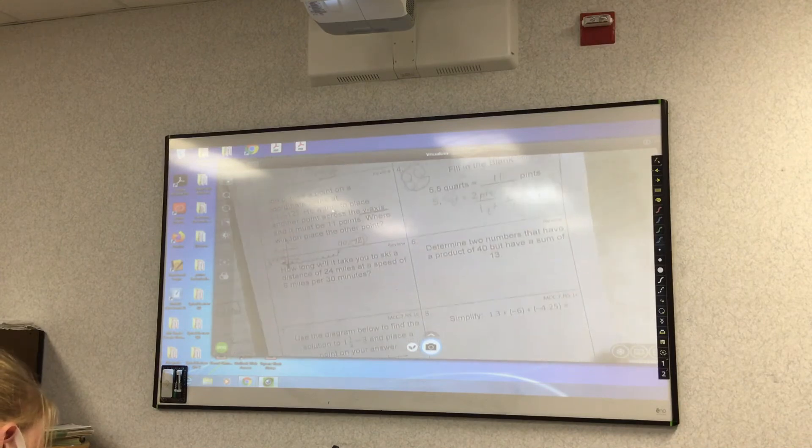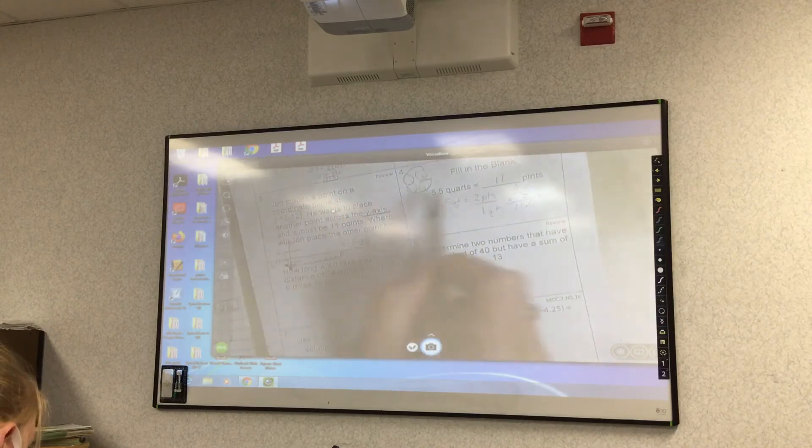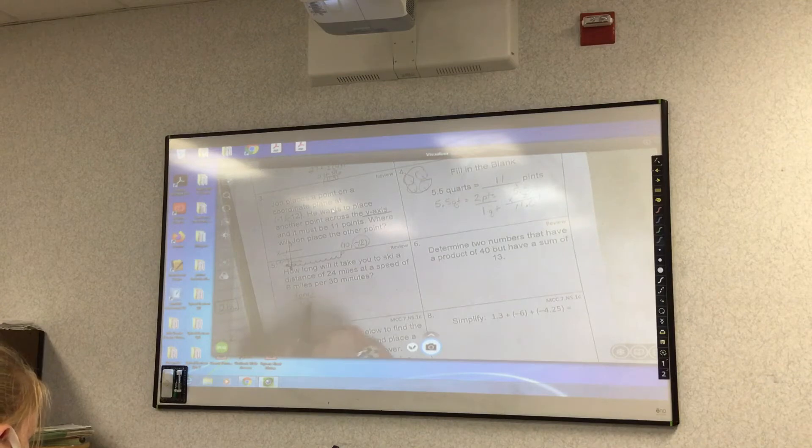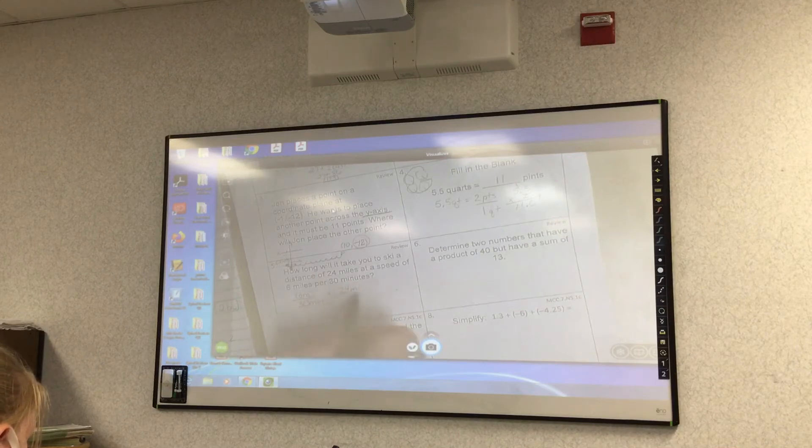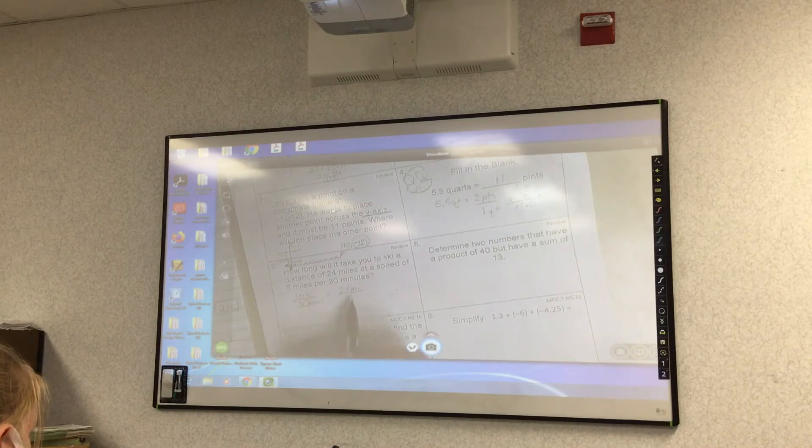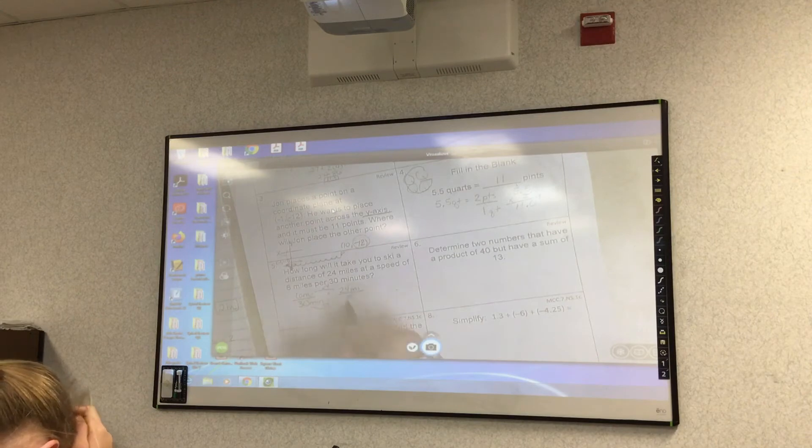How long will it take you to ski a distance of 24 miles at a speed of six miles per 30 minutes? Do you guys notice all of these problems are ones that we had this week? So if you go back to your notes, it'll help you when you're trying to fill it out. Six miles per 30 minutes. And I want to go 24 miles. So how many minutes would that be?